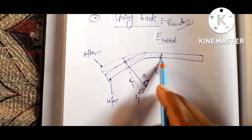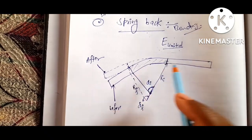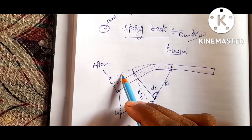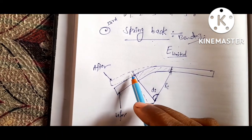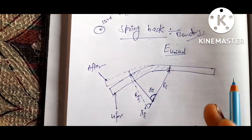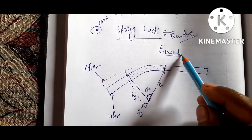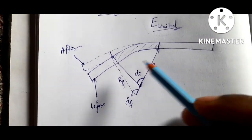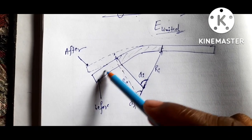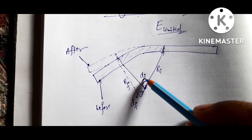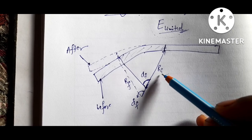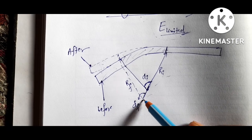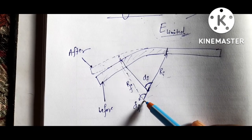This is the original bended part, and after you remove the load, the metal can shift — this shifting is also known as spring back, because of the elastic limit of the material. In this figure, the original bended part has an initial bend angle and initial bend radius. After spring back, this becomes the final bend radius.